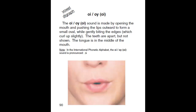The O-I, O-Y sound is made by opening the mouth and pushing the lips outward to form a small oval while gently biting the edges, which curl up slightly. The teeth are apart but not shown. The tongue is in the middle of the mouth.